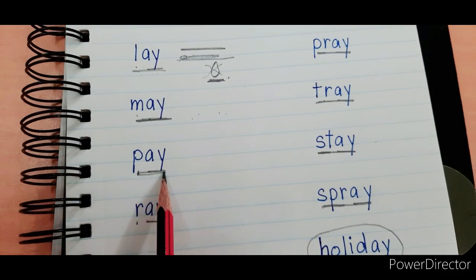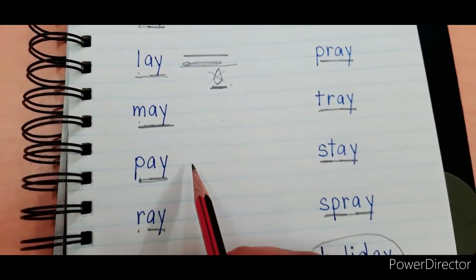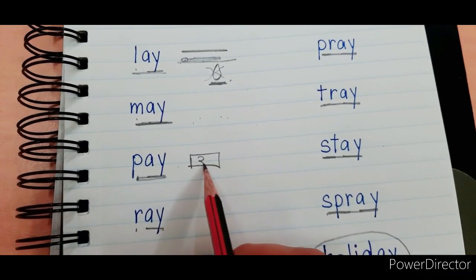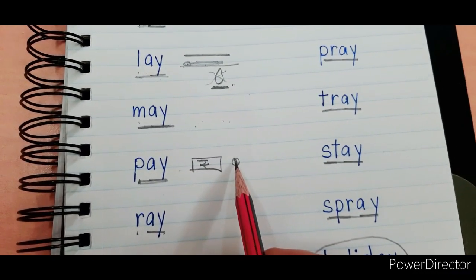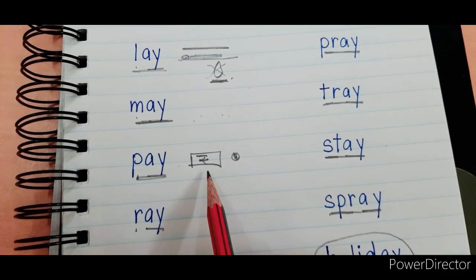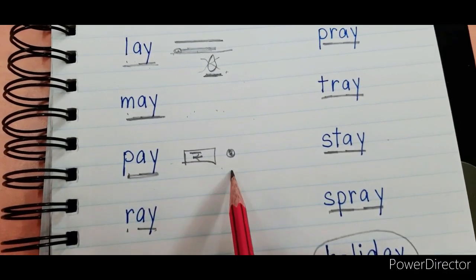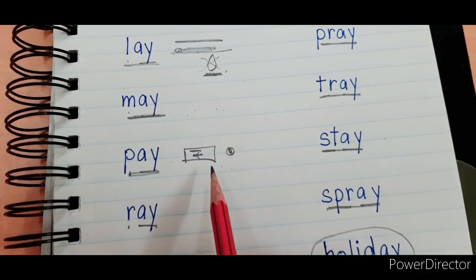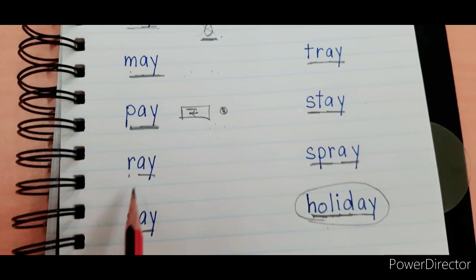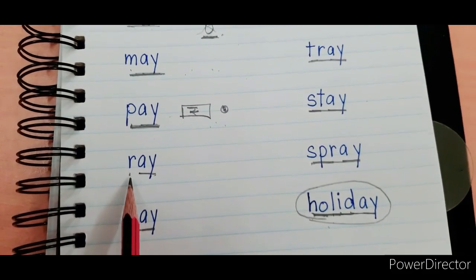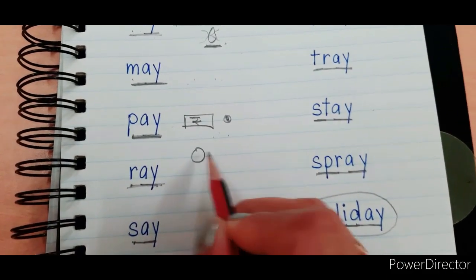'Pay' means to give someone money — money dena. You know, like rupees, coins — money dena. Jaise aap koi cheez kharidete ho ya kisi se koi kaam karwate ho, to usko money dete hai — usko bolte hai hum usko pay kar rahe hai. Next is 'ray'.